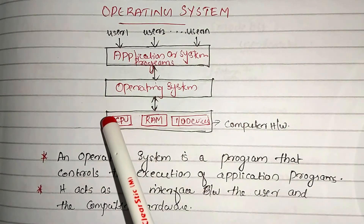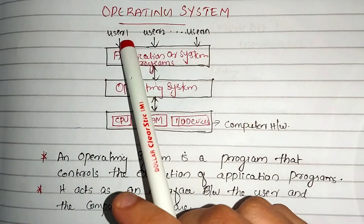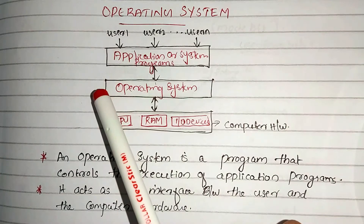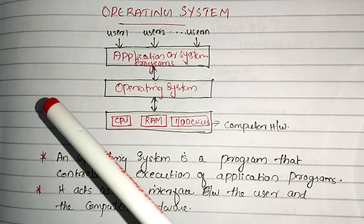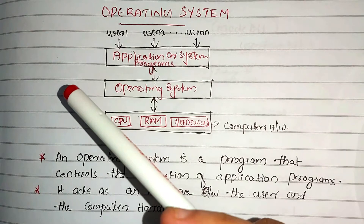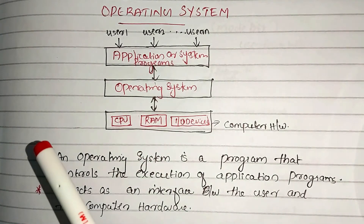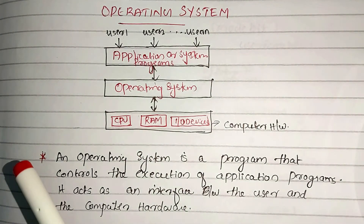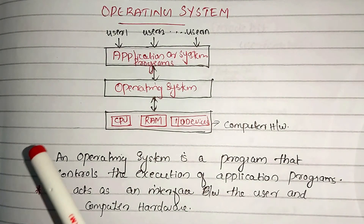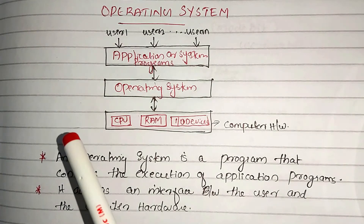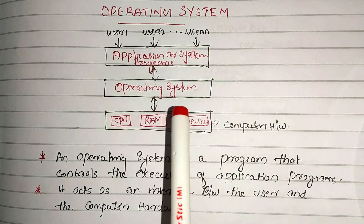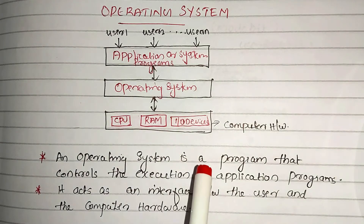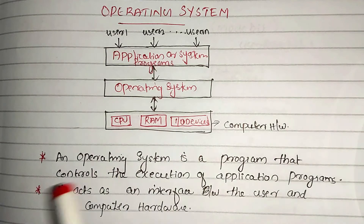For example, let's say a user wants to open an application like Microsoft Word. They can open it. As a normal user, they interact simply. Internally, the operating system communicates with the computer hardware to load Microsoft Word into memory.